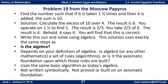Here's a problem from the Moscow Papyrus: find the number such that if it is taken one and a half times, then four is added, the sum is 10. Notice how they probably stated this — not in today's symbols; there was no multiplication symbol, no equals sign, no variables. But this really is an equation. Here's the solution they gave, translated: calculate the excess of 10 over 4 — the result is 6. Operate on a half to find 1 — the result is two-thirds. Take two-thirds of 6 — the result is 4.